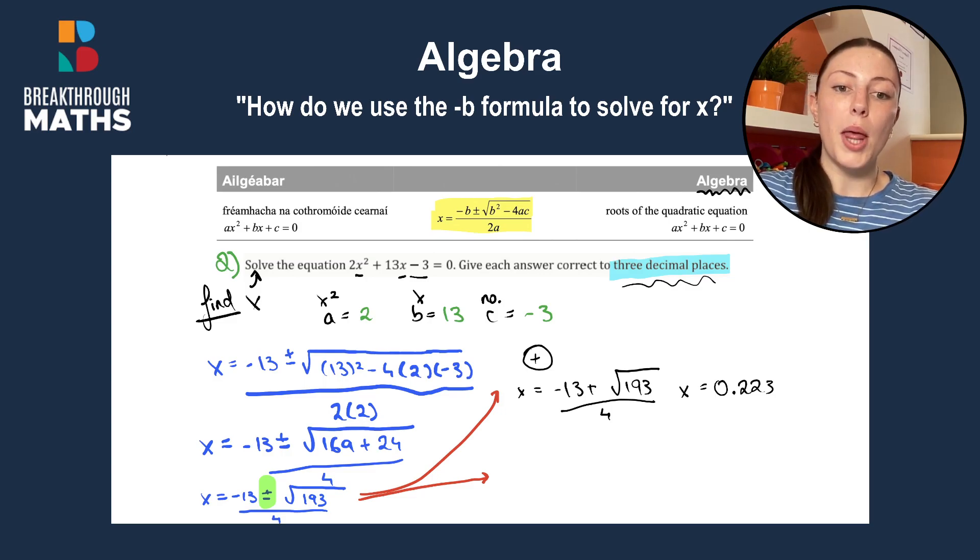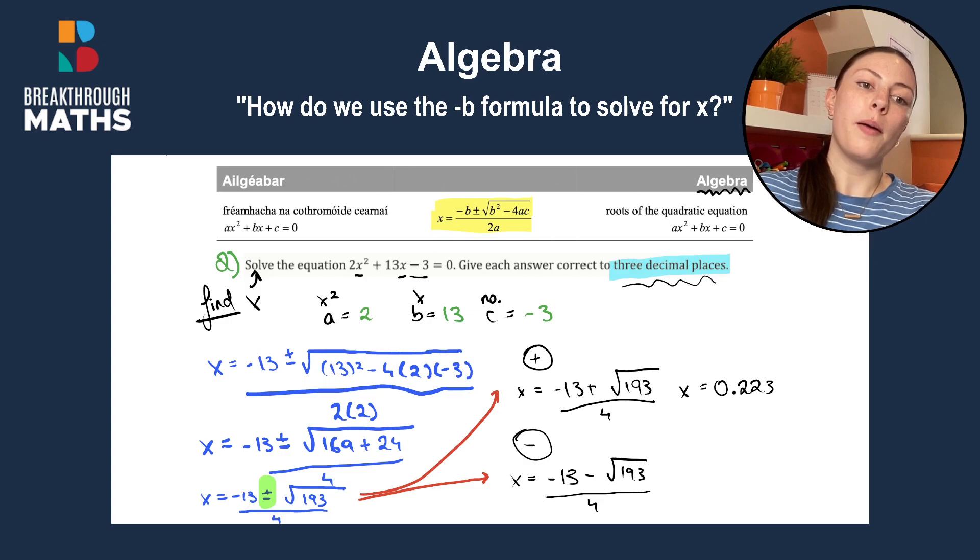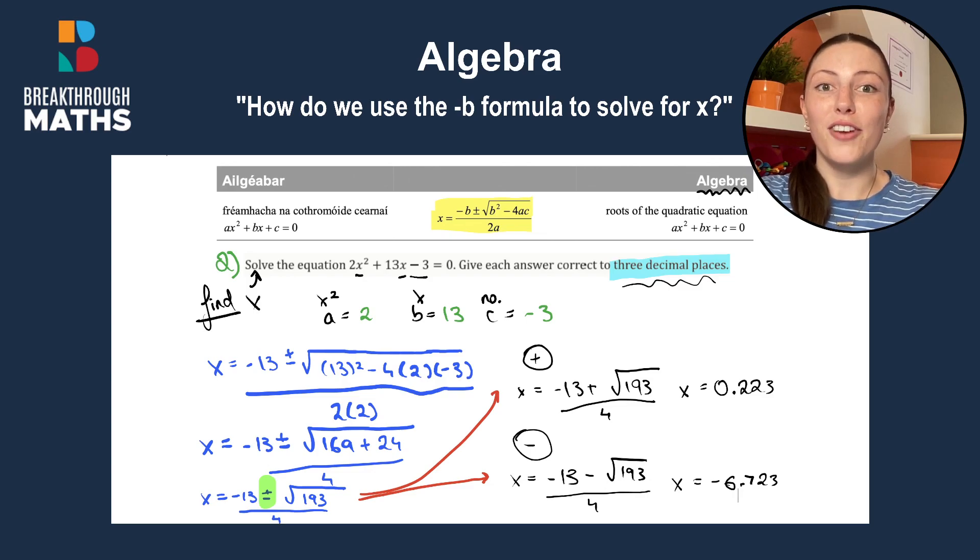Then when we use the minus option, x is equal to minus 13 minus the square root of 193 divided by 4, you get x is equal to minus 6.723, again to three decimal places. And that's how you solve for x using the minus b formula.